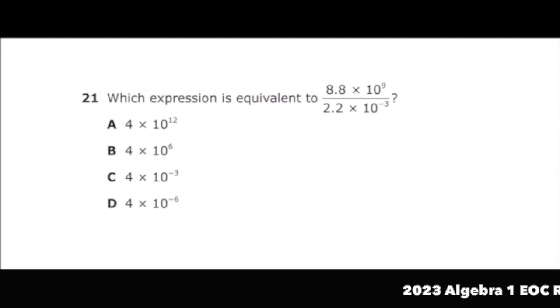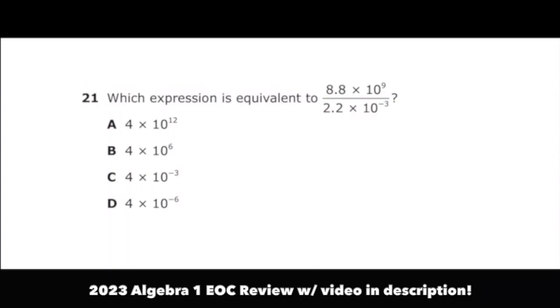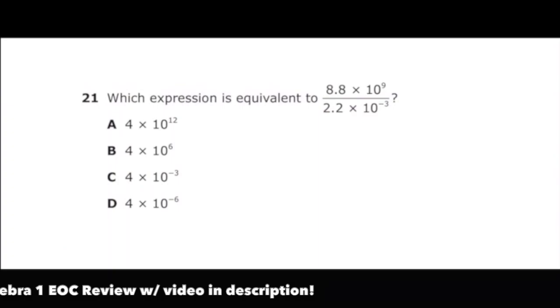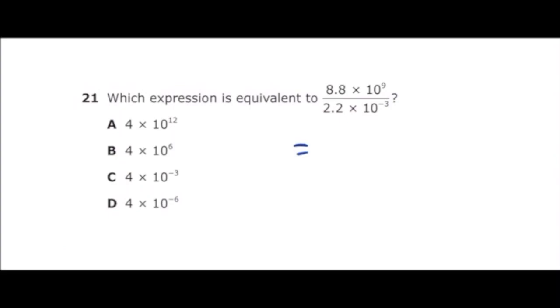This is number 21 from the 2022 Algebra 1 EOC. Which expression is equivalent to 8.8 times 10 to the ninth over 2.2 times 10 to the negative third? All we have to do to solve this problem is just put it into our TI-84 calculator or whatever graphing calculator you have and just let it tell us the answer. So once I do that, I'm going to get 4E12, which is the same thing as 4 times 10 to the 12th power. So our answer is letter A.